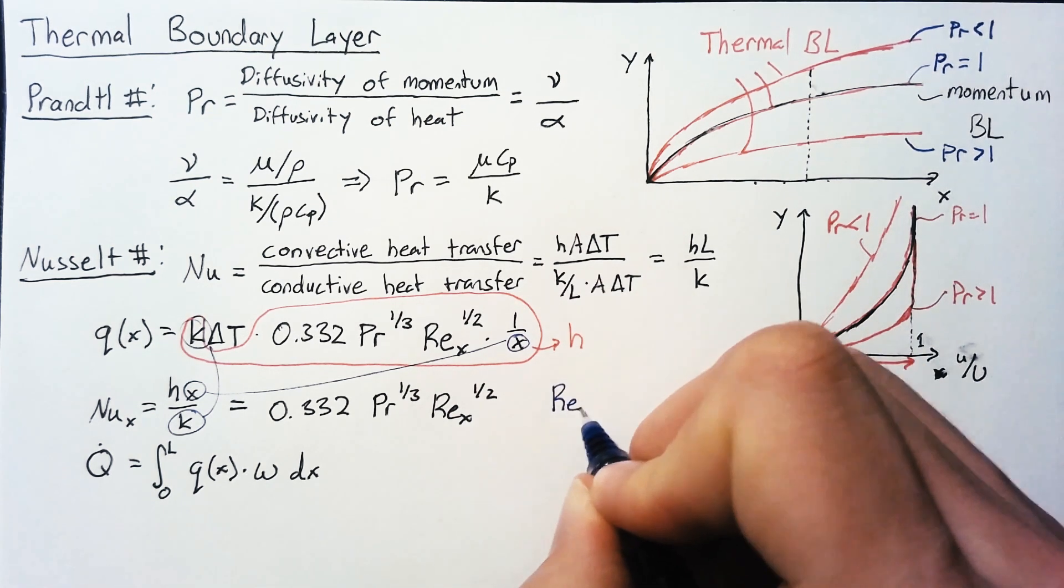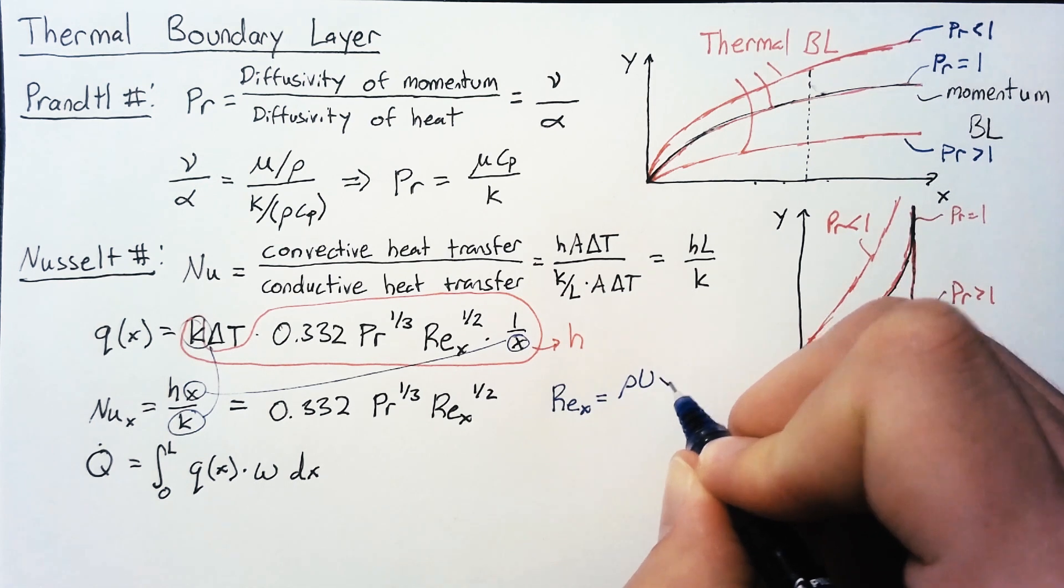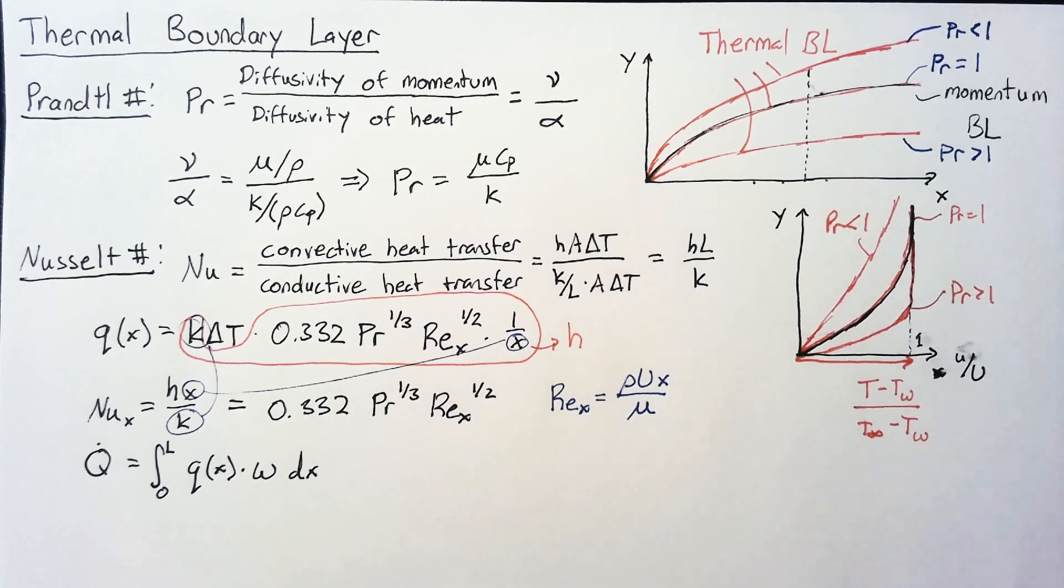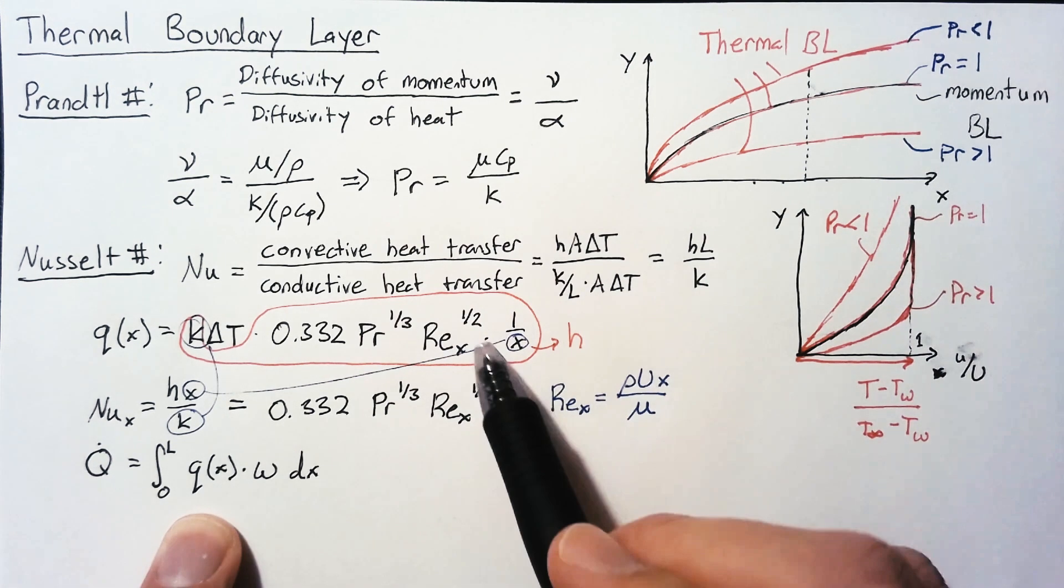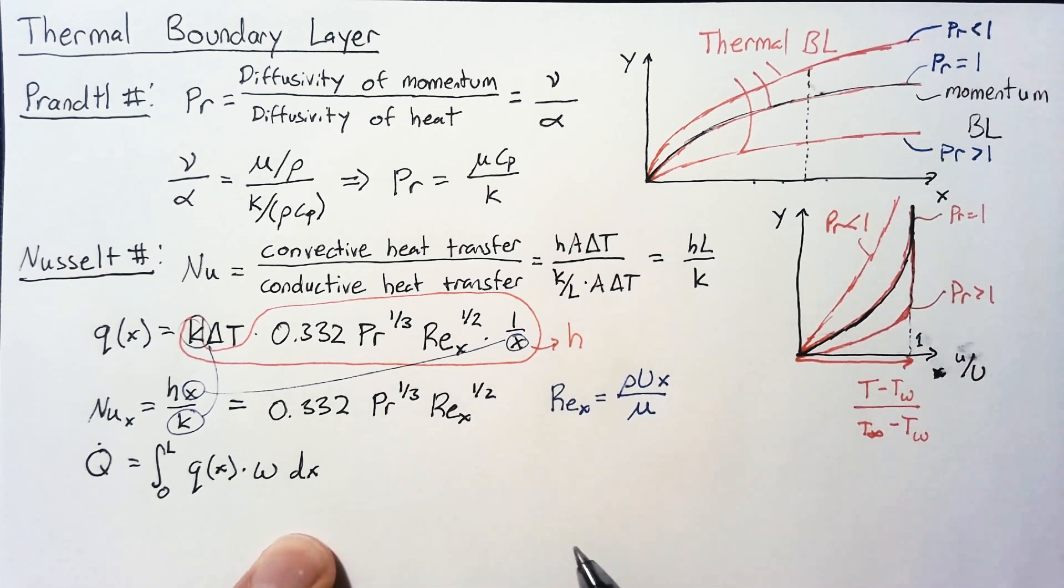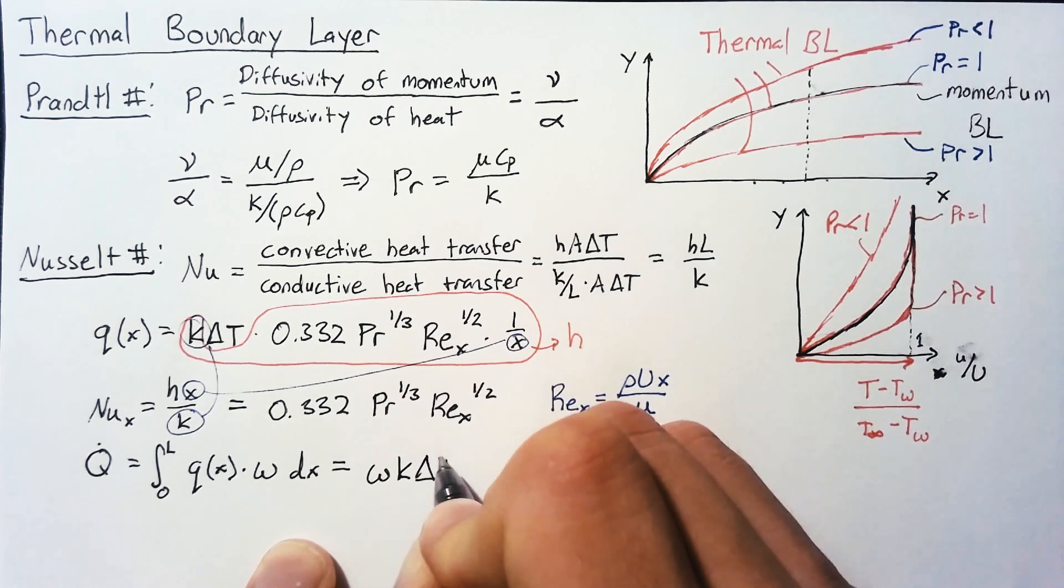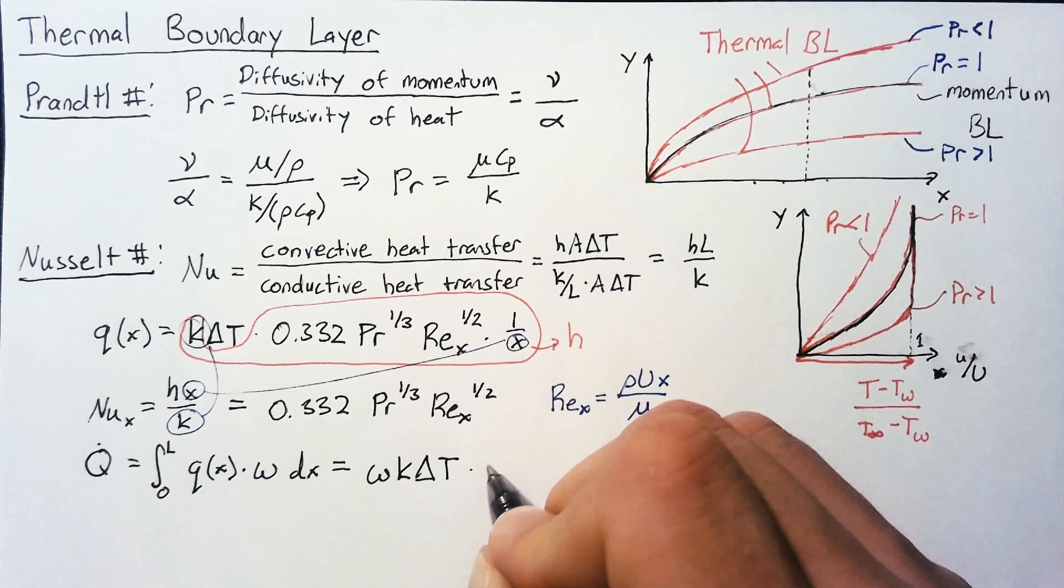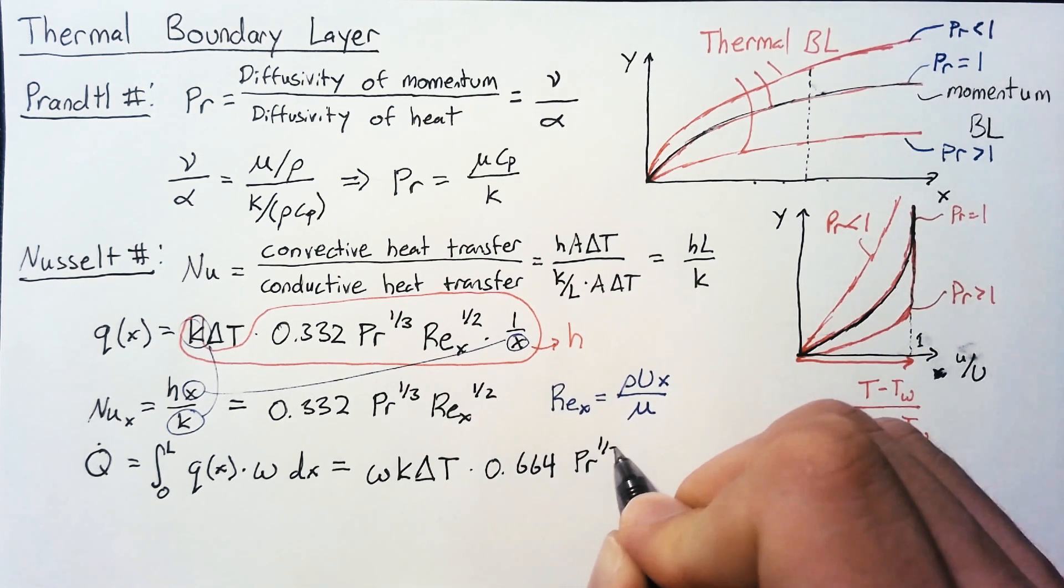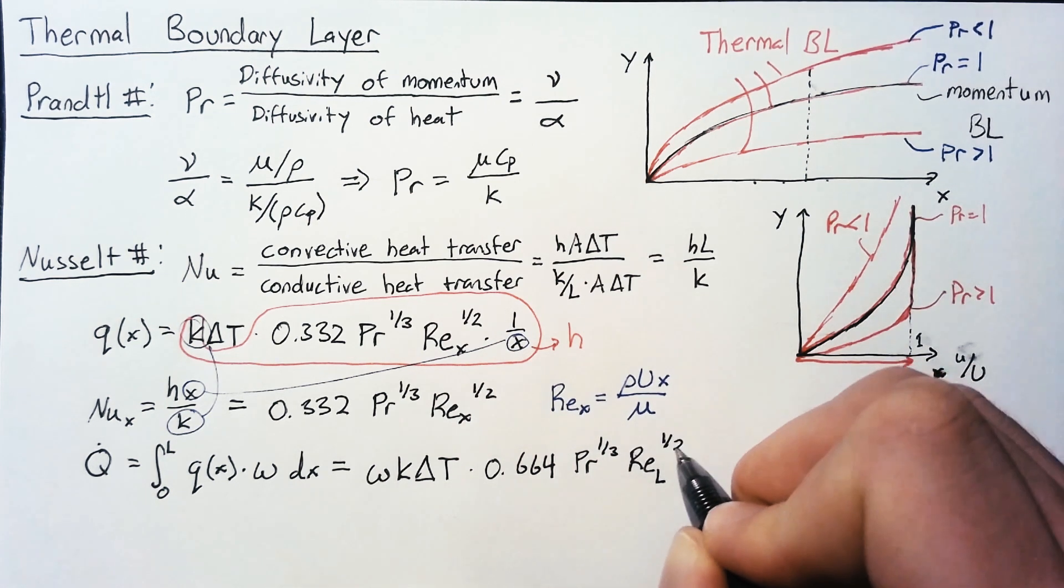The Reynolds number, just for completeness sake, is rho times our velocity U multiplied by X divided by the dynamic viscosity mu. The only variable in this integration is the square root of X divided by X, which is one over the square root of X. Everything else is constant. What we end up with from that is W multiplied by K delta T multiplied by 0.664 times the Prandtl number to the 1 third times the Reynolds number now based on L to the 1 half.